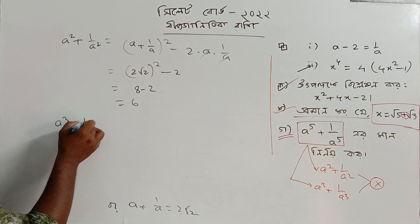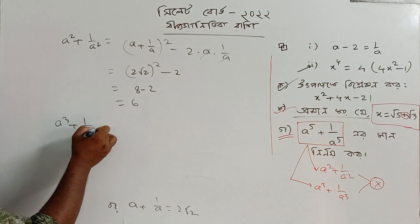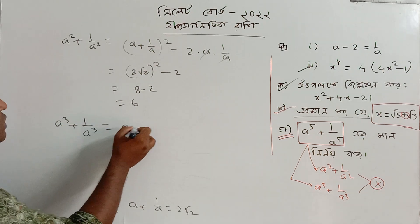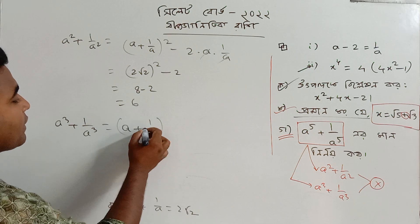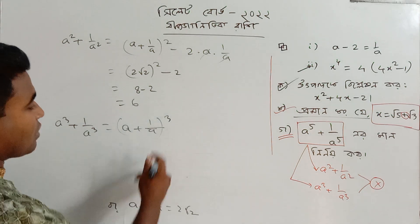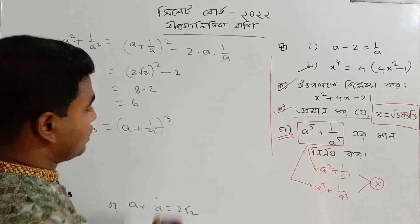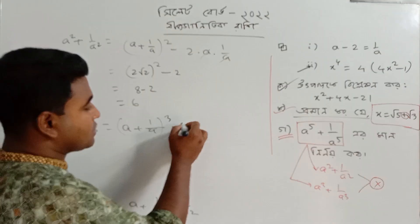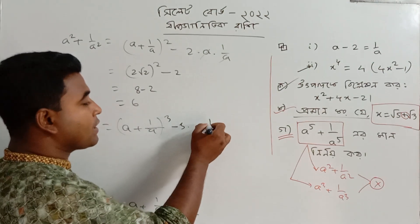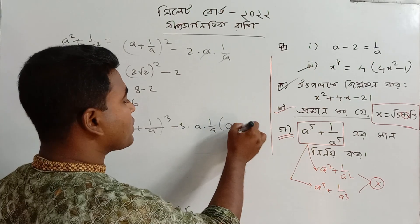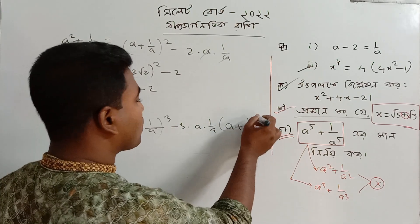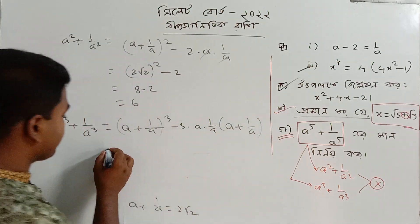Now, a cubed plus 1 by a cubed. We use the identity a plus 1 by a whole cubed minus 3ab times a plus 1 by a.